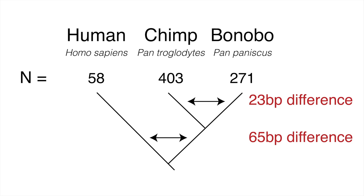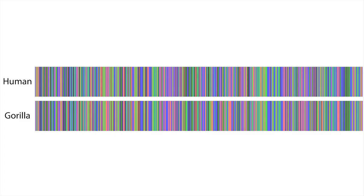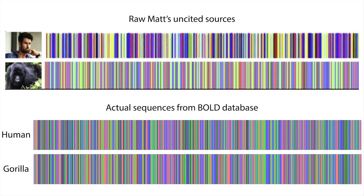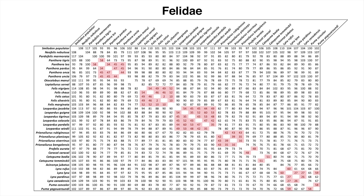So Raw Matt didn't do very well, did he? The only numbers he got right were the ones he quoted directly from a reputable source. And remember when he showed the image comparing the barcodes of humans and gorillas? When I generate the barcodes myself using CO1 barcode sequences downloaded from the barcode database, the human and gorilla sequences actually look like this — a bit more similar, isn't it? You decide which image you want to believe: Raw Matt's unsighted, cobbled-together image, or the actual sequences straight from the Barcode of Life Data System database. Back to the numbers — what do these real nucleotide differences mean for Raw Matt's conclusions? I'm sure you've noticed that cats and lions have more CO1 barcoding differences than humans and chimps do — even more than humans and gorillas. The same goes for the wolf and fox — they're more different to one another in this barcode sequence than humans and chimps are, even more than humans and gorillas.